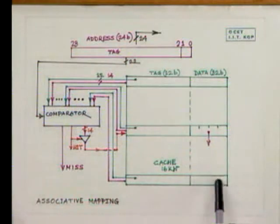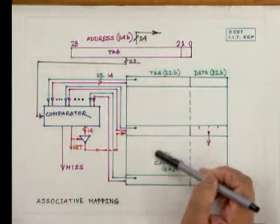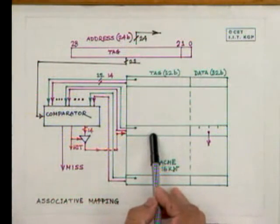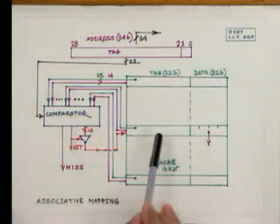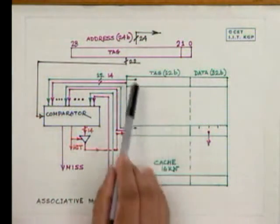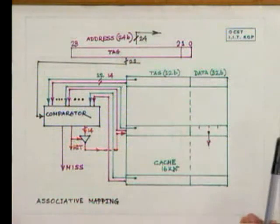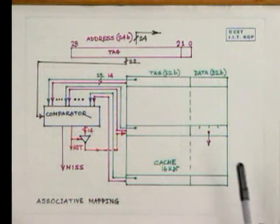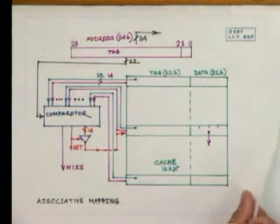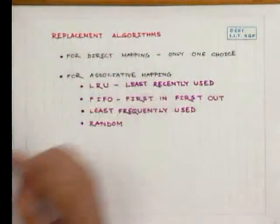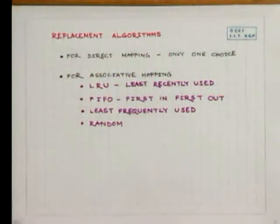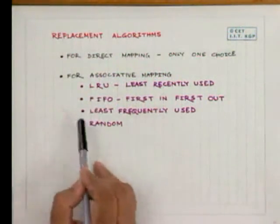There should be some algorithm to decide which particular cache line should be selected for replacement — whose tag field and data field should be replaced with the newly fetched content when there is a miss. There are several algorithms for this; we call them replacement algorithms. For direct mapping there is no choice, but for associative mapping there are different choices. Three depend on the use of a particular line in the cache, and one is random.